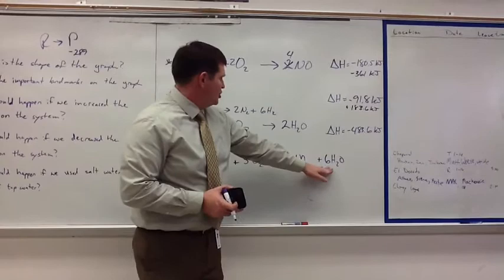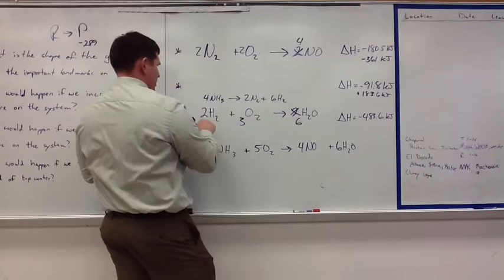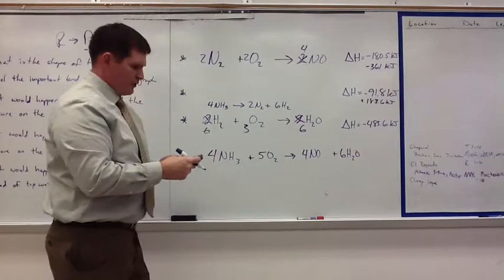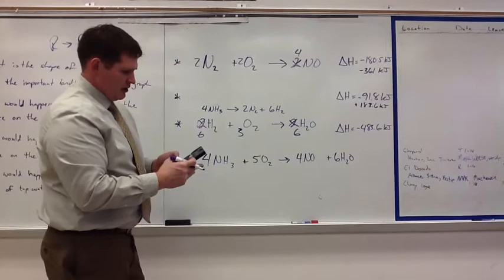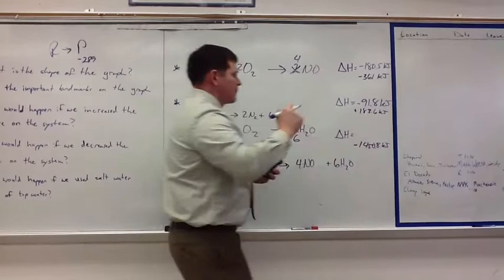The H2O. I have H2O in one location, it's right here. I need to make it six though, so I'm going to multiply by three, which makes that a six, which makes that three, and which makes that six. Since I multiply everything by three, I'm going to multiply the enthalpy as well by three, which gives me negative 1,450.8 kilojoules.